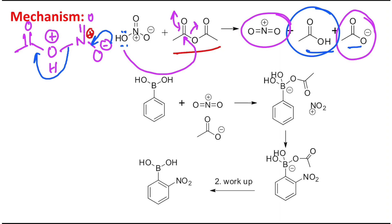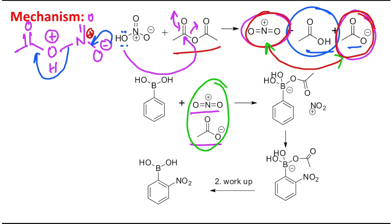The nitronium acetate is a cationic species, and the acetate anion will be there to neutralize the charge — it is anionic. So nitronium acetate acts as the electrophile. Now, as I mentioned, boronic acid is a six-electron species and is electron deficient. The nitronium group is also electron deficient because nitrogen carries a positive charge. But the acetate anion is significantly electron rich, and boron can act as a Lewis acid — so acetate acts as a Lewis base and donates electron density to boron.